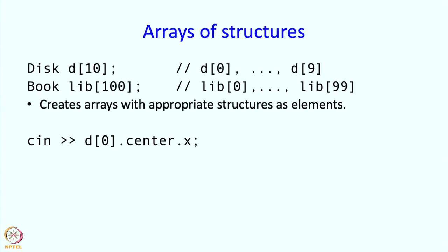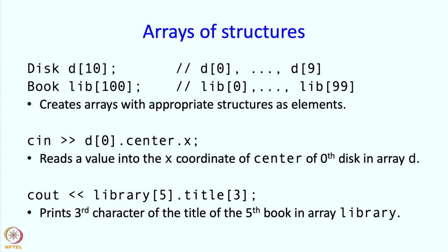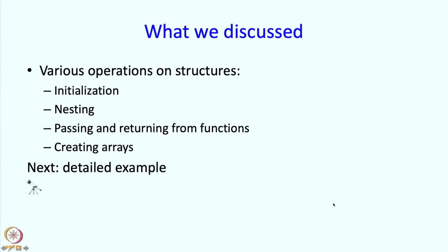Now, these variables are just like ordinary disk variables and so, I can take the center x and all the usual stuff. And this also is a usual variable. I can take its member but the member happens to be an array. I can index into it and so, this is going to print the third character of the fifth book in the array library. I guess I should have called it lib because this is how we created it. Read this as lib in both places.